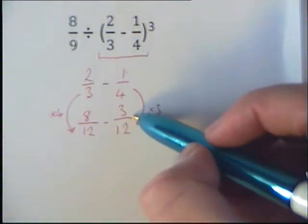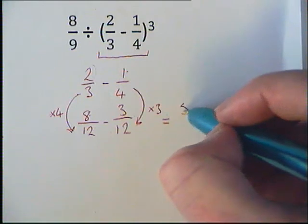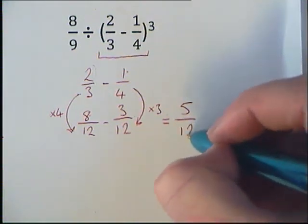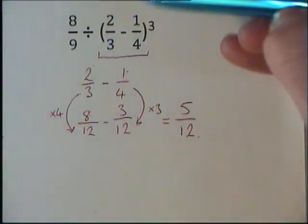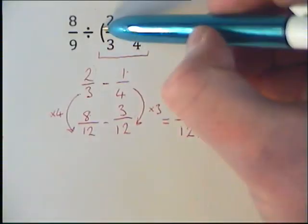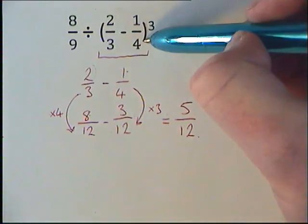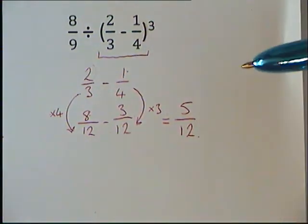The 12 on the bottom stays the same. But again similar to question 3, we've still got our brackets and our cube. We haven't dealt with our indices yet. So our fraction stays in our brackets with our cubes.